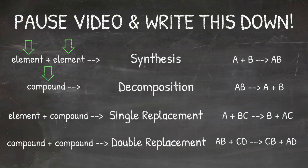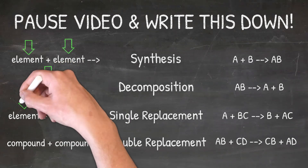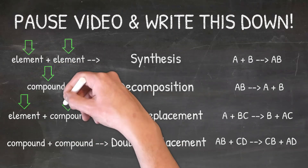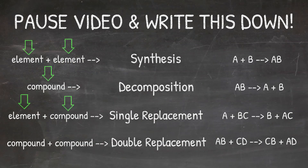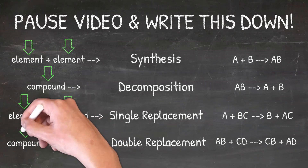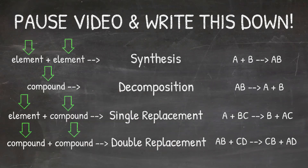If you start with one element and one compound, the reaction will always be single replacement. And if you start with two different compounds, it will always be a double replacement reaction. So using this chart can help you easily look at the reactants in a chemical reaction and identify the reaction type.